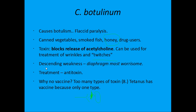Botulism causes descending weakness — first you may have trouble blinking, then weakness descends to your arms, then to your diaphragm. If the diaphragm stops working, you can't breathe and you suffocate. Treatment is antitoxin. A vaccine is not practical because the botulism toxin has eight types, while tetanus has only one — so there are too many types of botulism toxin for an effective vaccine.